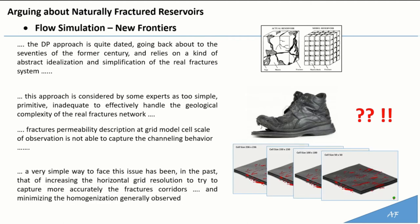Considering the very high uncertainties affecting the discrete fracture network, a simple way to face these issues has been, in the past, that of increasing the horizontal grid resolution to try to capture the fracture corridor more accurately — discriminating between fractured versus non-fractured areas and minimizing the homogenization generally observed. The drawback is the high computational cost due to the large number of grid cells.